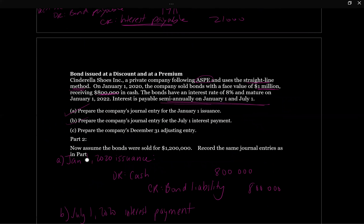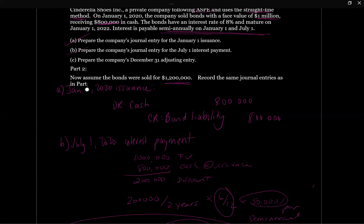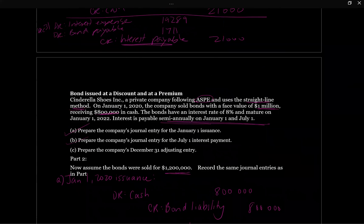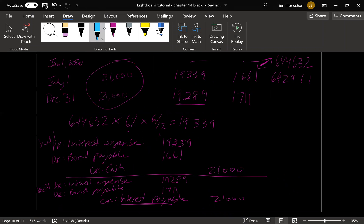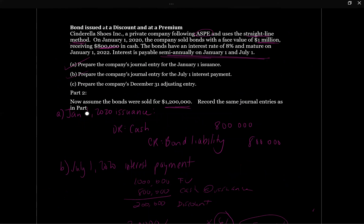Now assume the bonds were sold for $1.2 million — record the same journal entries as in part one. If the bonds were sold for $1.2 million, the cash proceeds change to $1.2 million. Now we have a premium because we received more than the face value of the bonds — the bonds still have a face value of $1 million but we got $1.2 million in, so instead of amortizing a discount we're amortizing a premium.